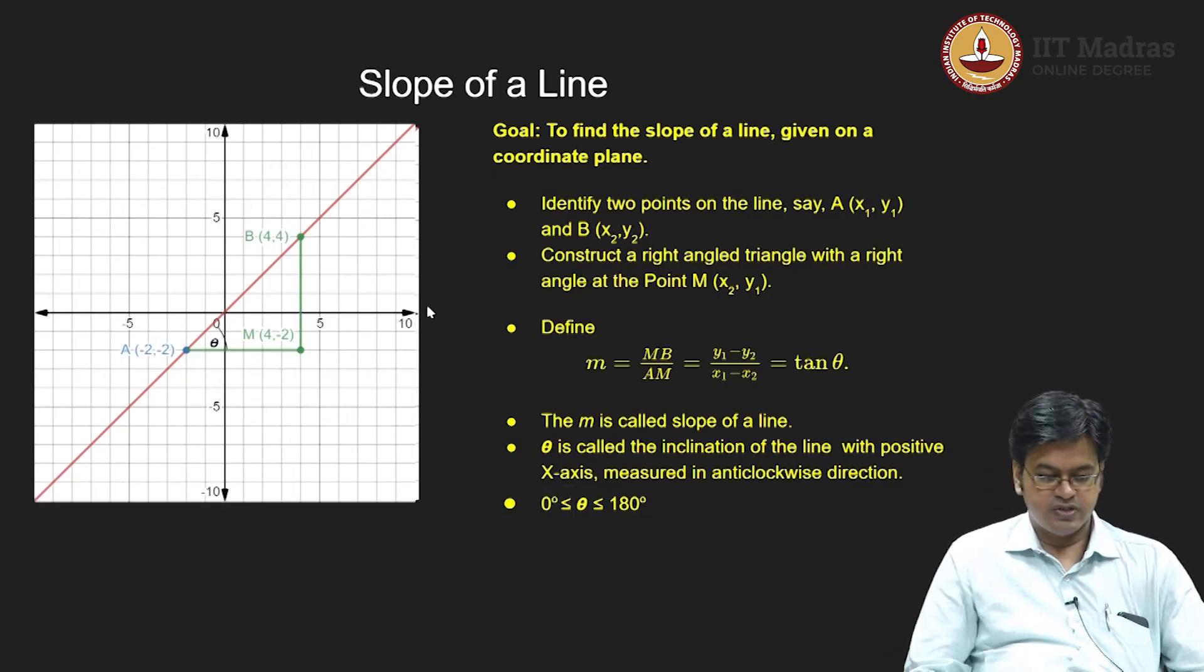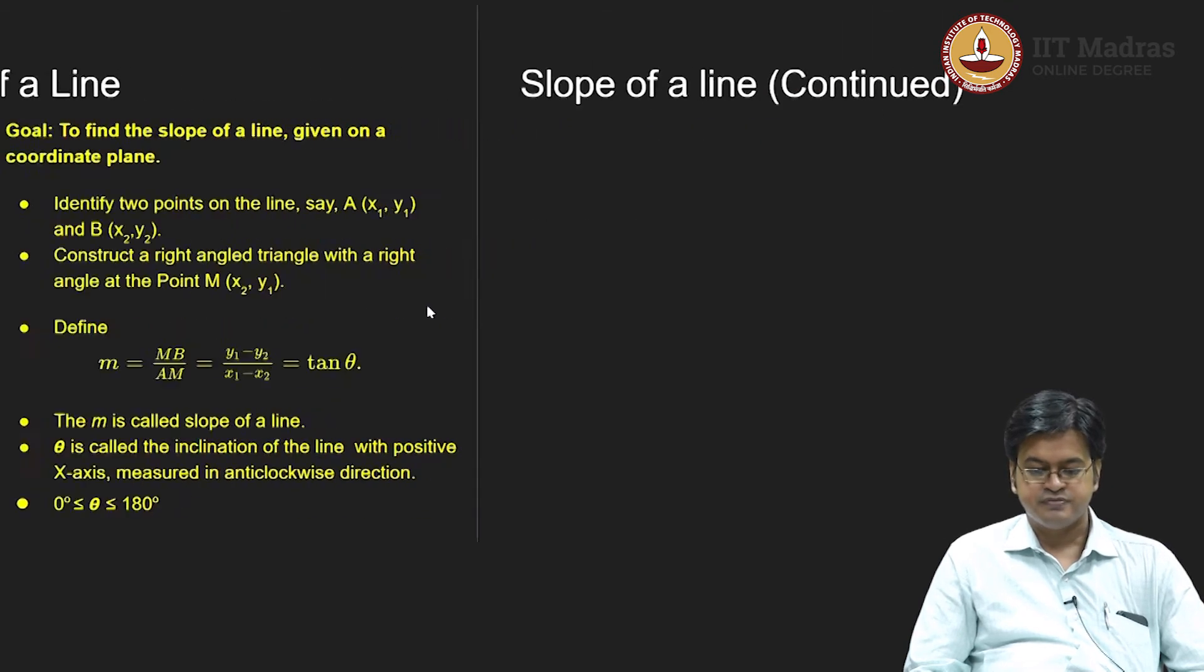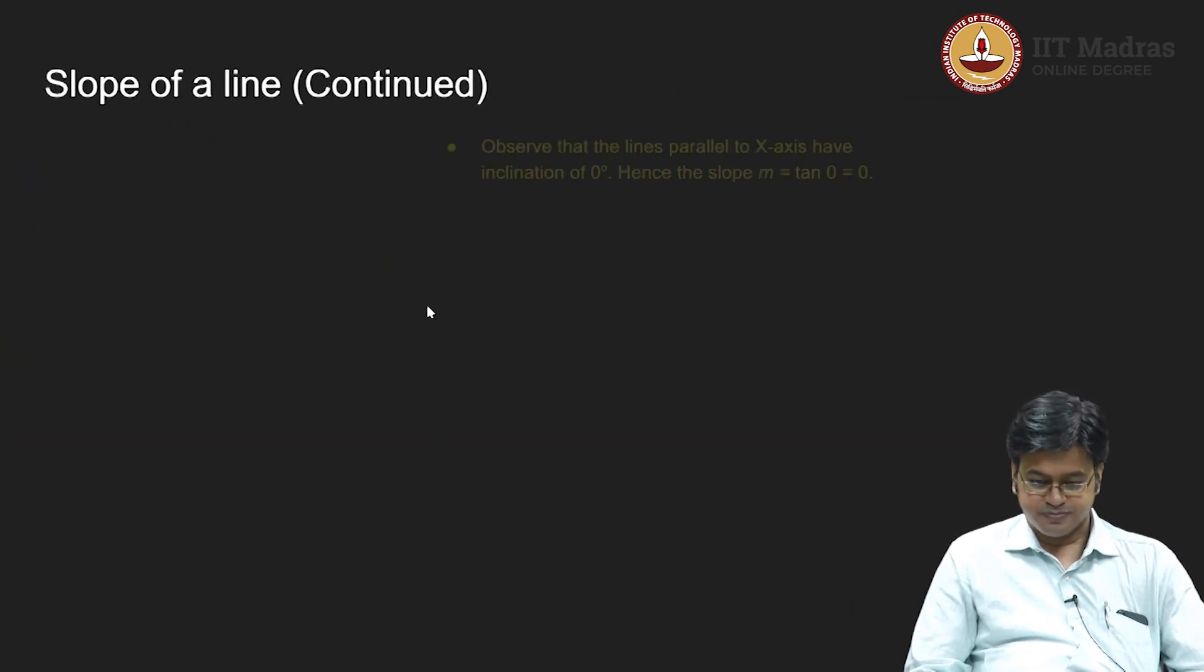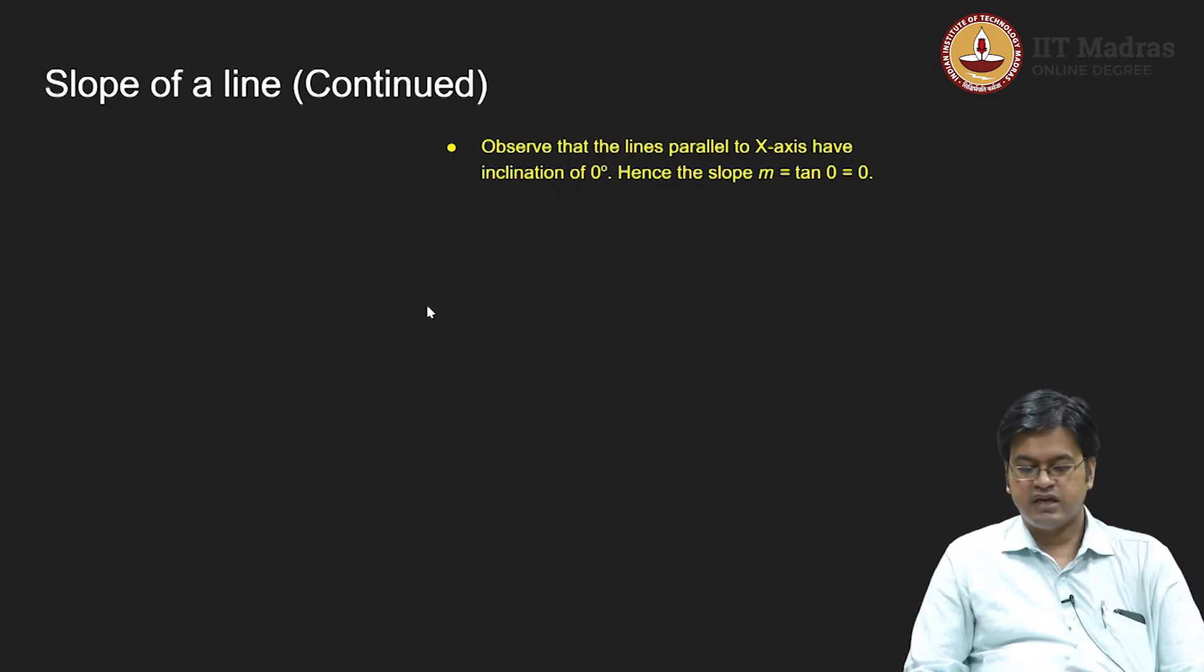So now let us have a look at the salient features of the slope of a line. In particular, let us see if the line is parallel to x axis, the angle of inclination is 0 degrees. Therefore the slope of a line should be 0.